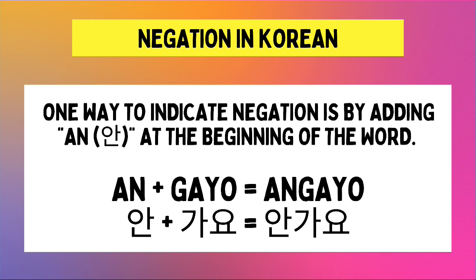If the word is Kayo, we just need to add AN at the beginning of it to make it a negation. Kayo means 'to go,' so when we negate it, Angkayo becomes 'to not go.'